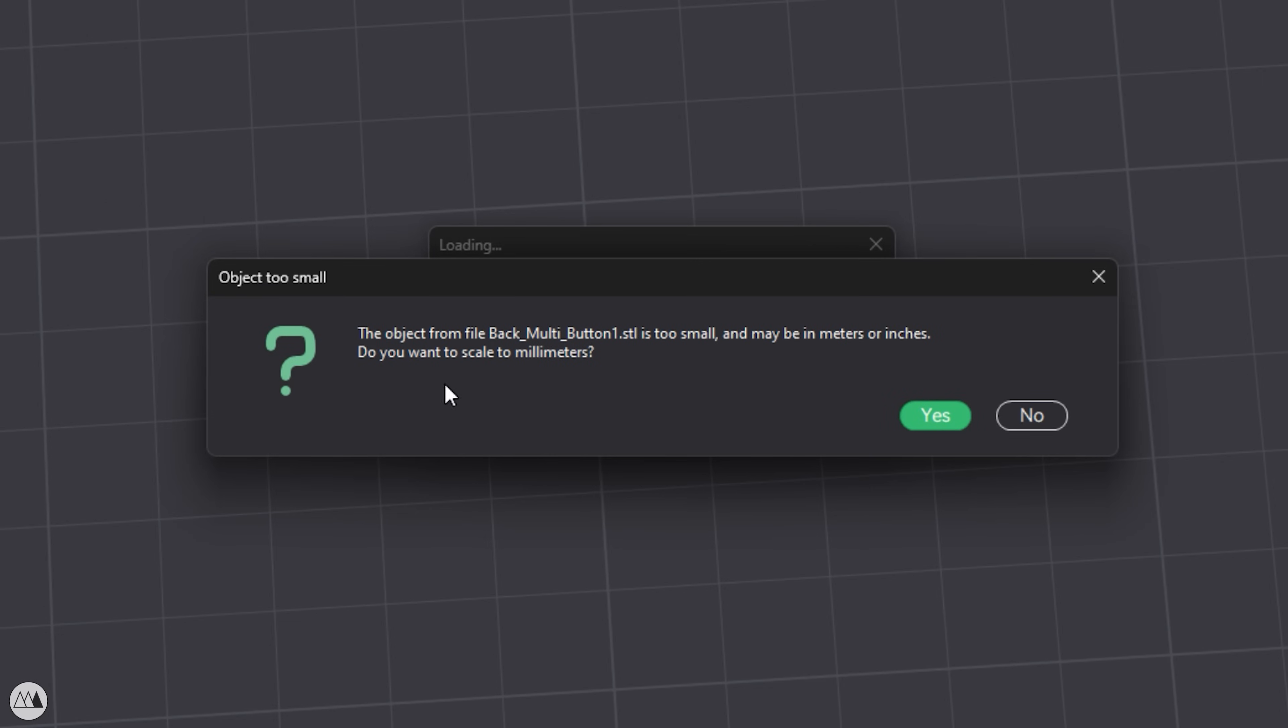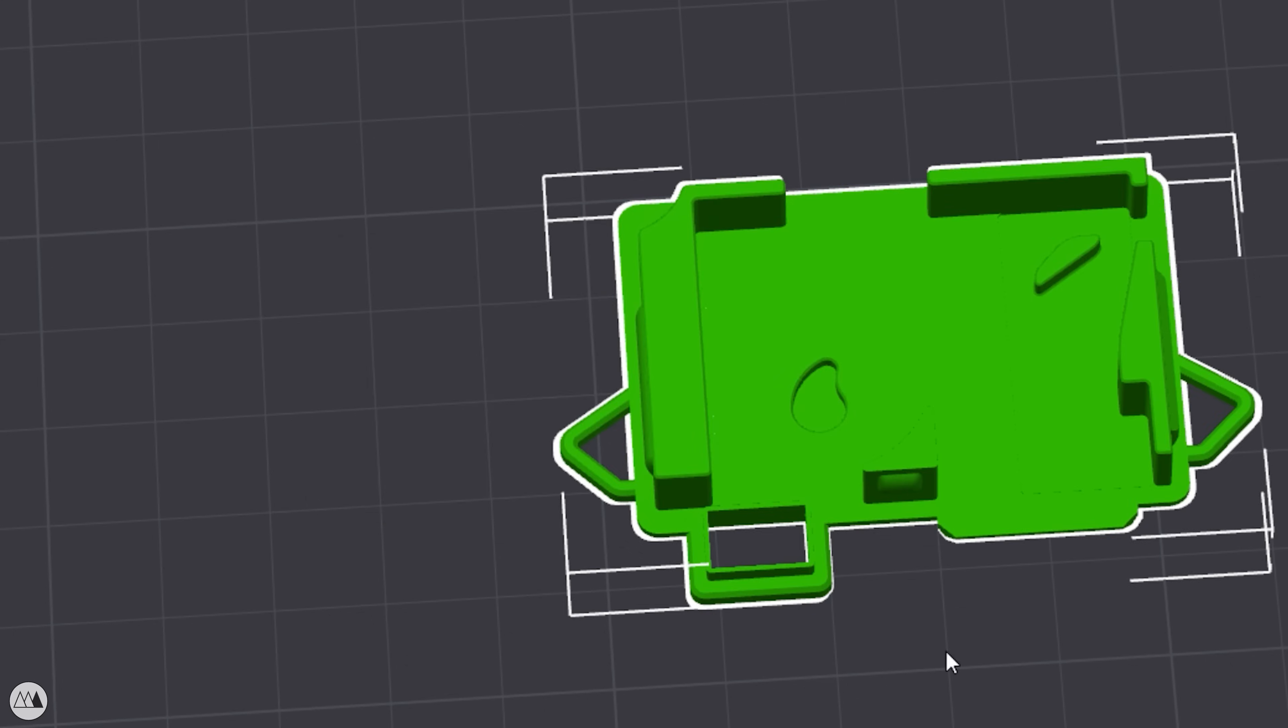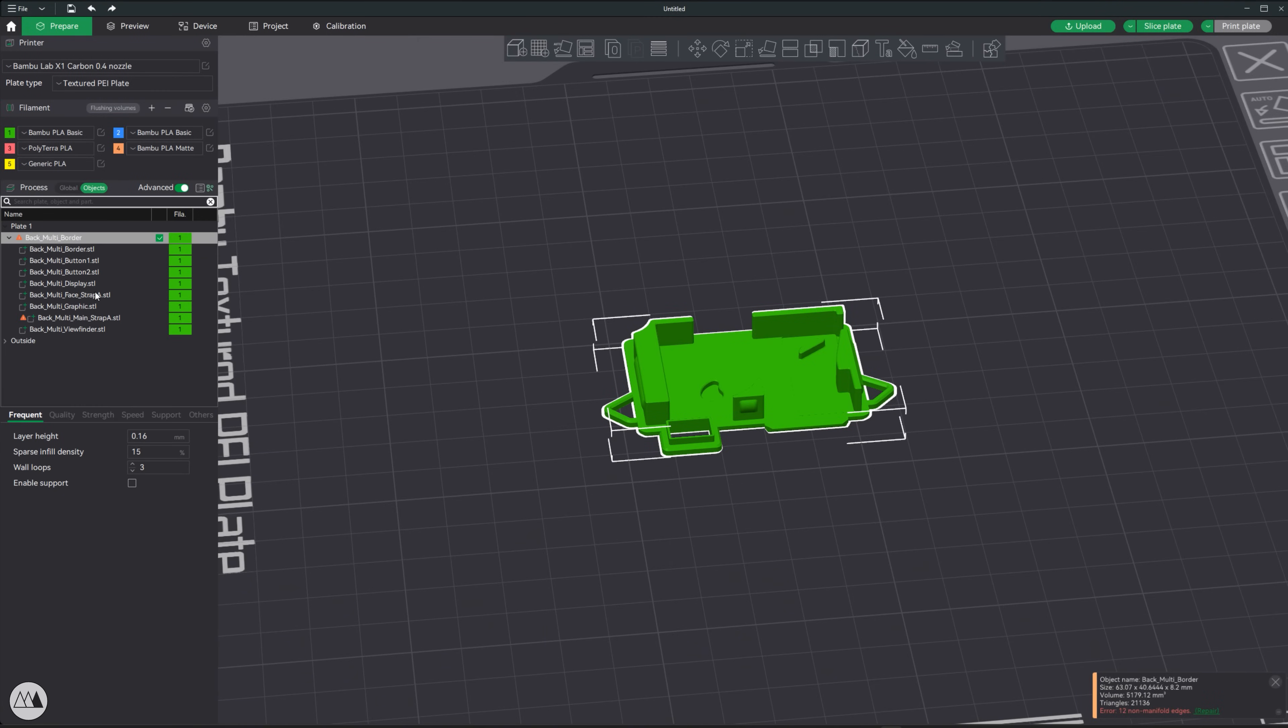And this will vary a bit between slicers, but I'll make sure not to scale or move any of the parts. And by importing them as a single object, everything stays aligned. Now I can just select the colors for each component since I'm printing on my multi-color X1 Carbon here.